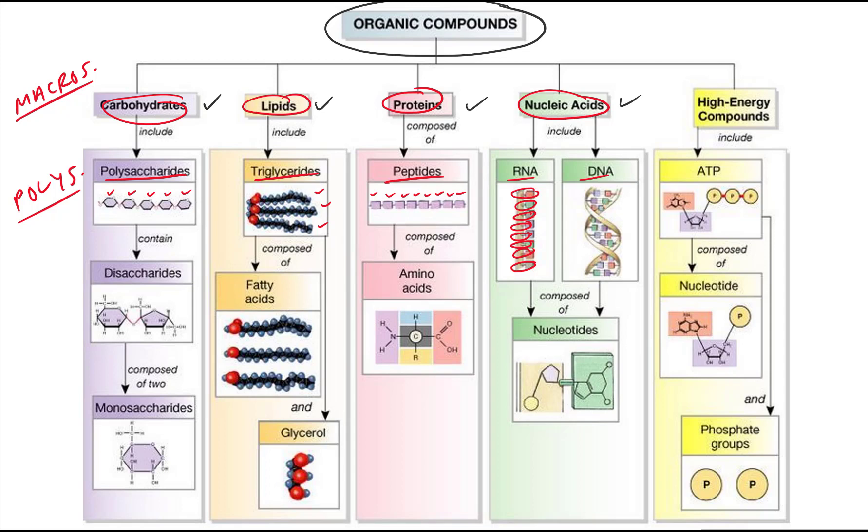Now let's get down to the monomers, what are the individual subunits. So if we're talking about a carbohydrate the monomer of a carbohydrate is something called a monosaccharide. The monomer of a triglyceride, of a lipid, is something called a fatty acid. The monomer of a protein is something called an amino acid and the monomer of nucleic acids are these things called nucleotides.